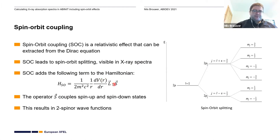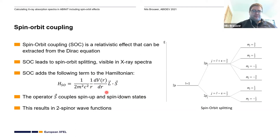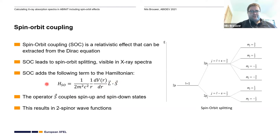It mainly couples the orbital momentum to the spin operator. And since the spin operator couples spin-up and spin-down states, we have a mixture of those and we have in the results two-spinor wave functions. If you activate it with nspinor=2, this term also will be automatically activated and you will get spinor calculations.